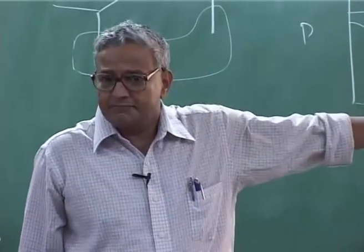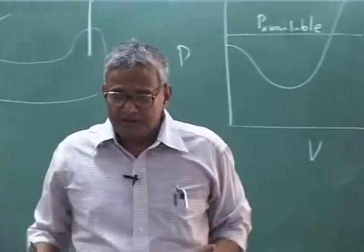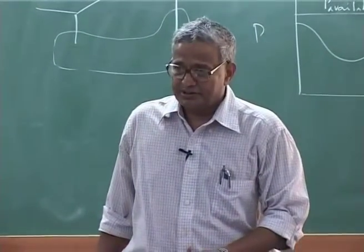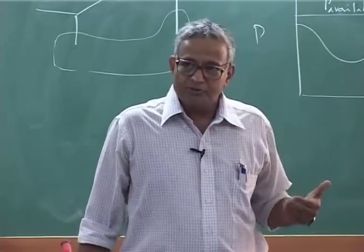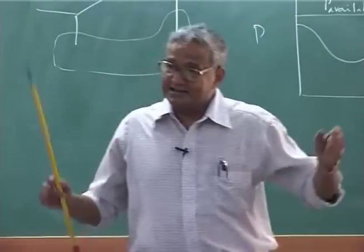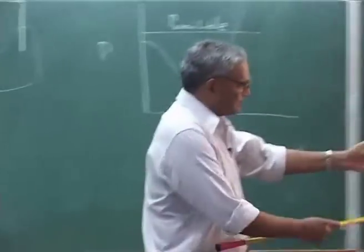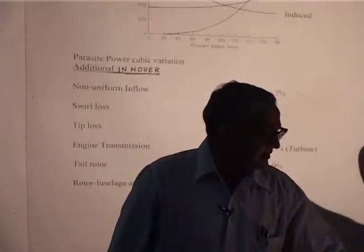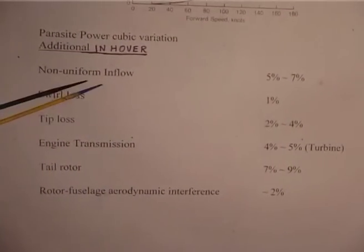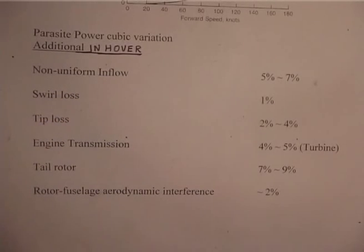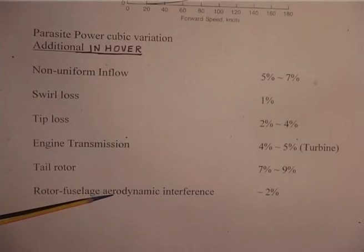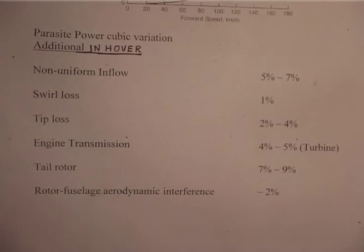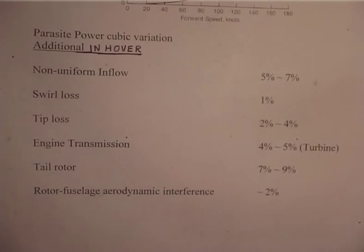Besides the three major power components, there are other losses: rotor inflow interference with the fuselage, tail rotor power, gear transmission losses, tip losses, swirl effects, and non-uniform inflow. These are not easy to estimate — you have to do actual flight tests. Today's CFD people are trying to compute these, but that is still a long way to go. You have other losses also — these are just estimates.